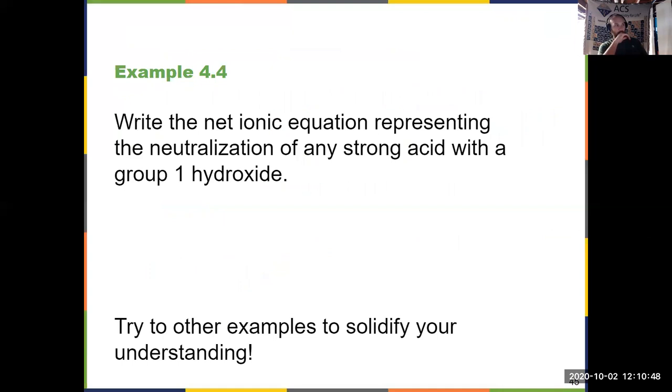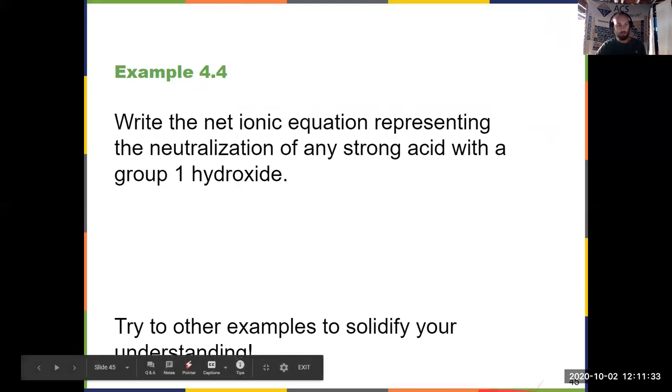So we finished. Example 4.4 here, I asked you to write the net ionic equation representing the neutralization of any strong acid. So choose any one of the seven strong acids with a group one hydroxide. So NaOH or KOH would be a good choice there. No matter what you choose in any of those possible combinations, you get the same final answer for the net ionic equation. It's H+ aqueous plus OH- aqueous forming H2O liquid. So I recommend you pick an example. Try that out for practice. When you write the net ionic equation, that's what you should get for your answer. If you don't, then get in contact with me and we can talk about what's going wrong.